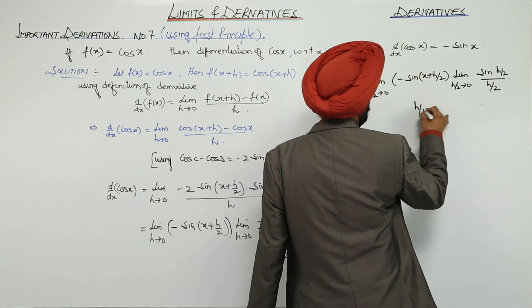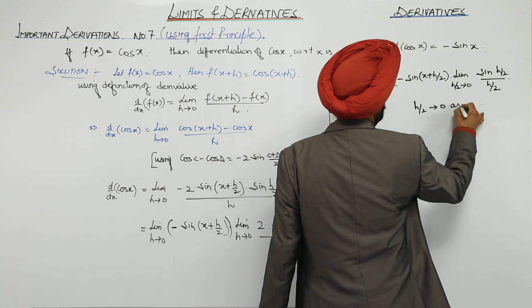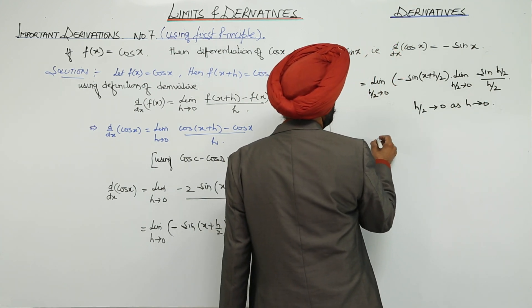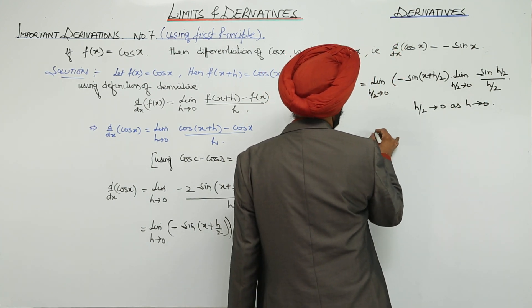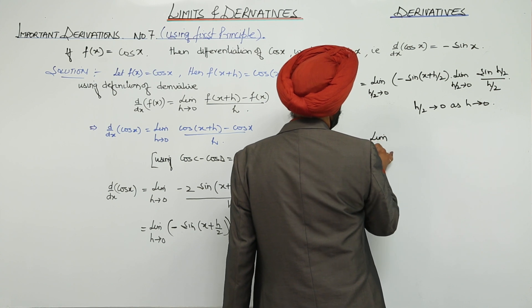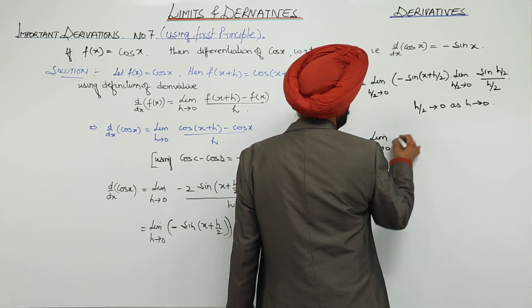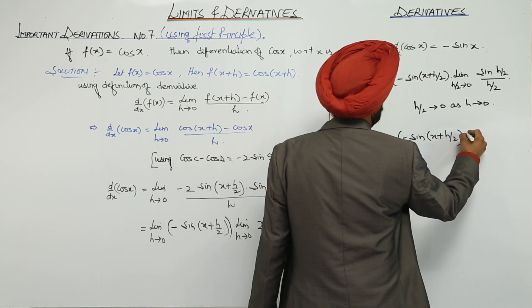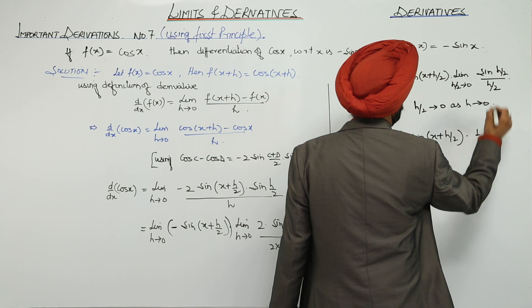h/2 approaches to 0 as h approaches to 0. Now, this becomes limit h/2 approaches to 0, negative of sin(x + h/2) times 1.